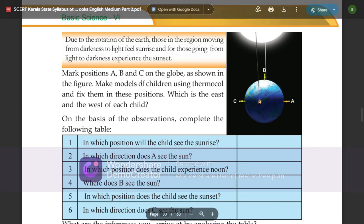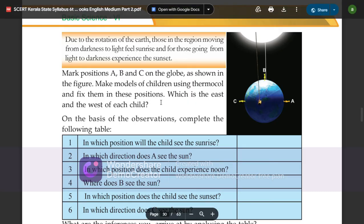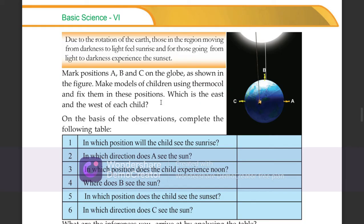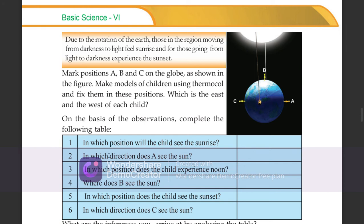Mark positions A, B, and C on the globe as shown in the figure. Make models of children using thermo-col and fix them in these positions. This shows the east and west of each child. On the basis of the observations, complete the following table.